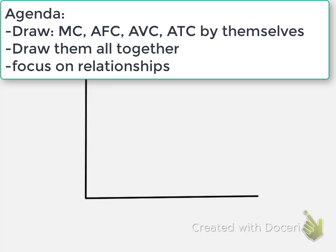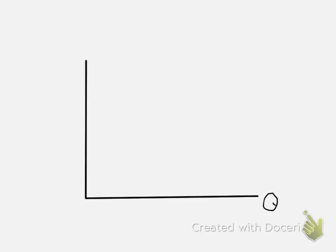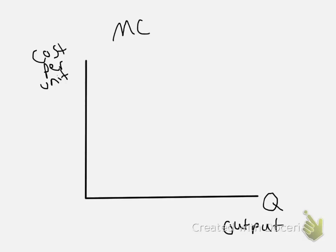We're going to start with these axes. The x-axis we will label quantity, abbreviated Q, and you can also think of that as the firm's output. On the y-axis we have the cost per unit. Starting with the marginal cost curve: marginal cost equals the change in total cost divided by the change in output. If the change in output equals 1, then marginal cost is just the change in total cost — how much does your total cost go up when you produce one more unit?